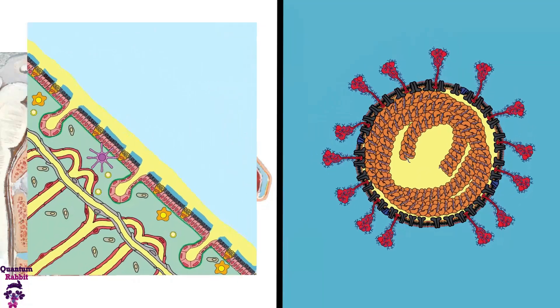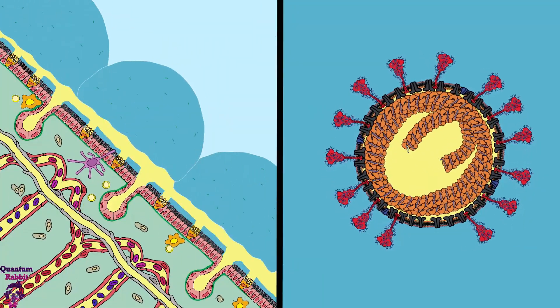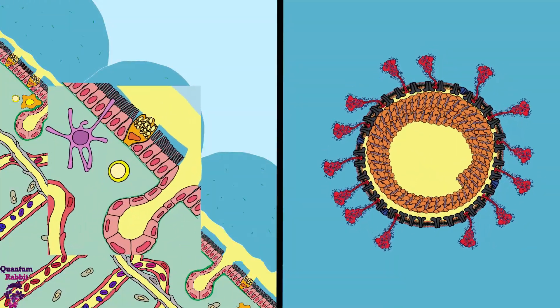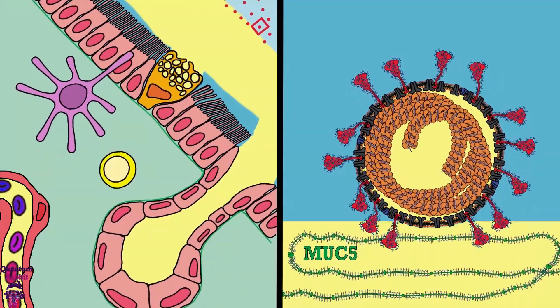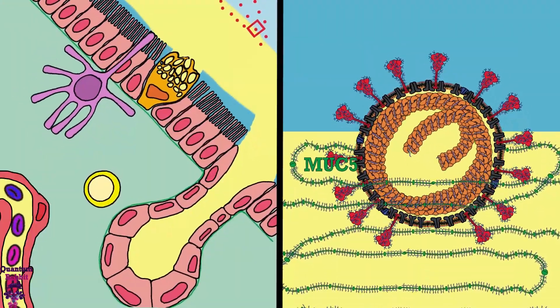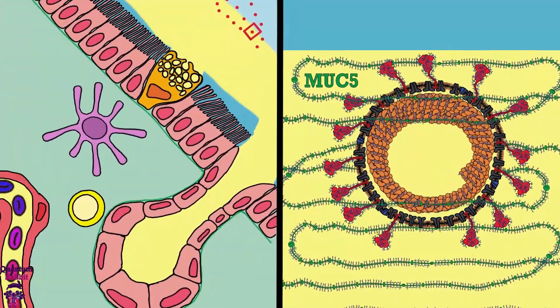But before it can reach a cell, the virus has to pass through a protective layer of mucus. The first proteins that the virion stumbles upon entering the mucus are the mucins. These filamentous proteins give the mucus its viscosity.